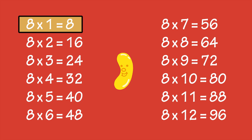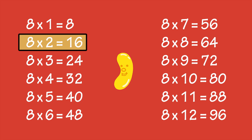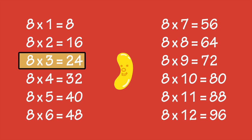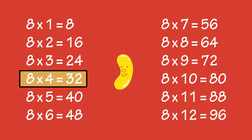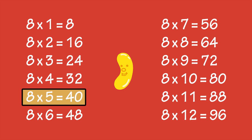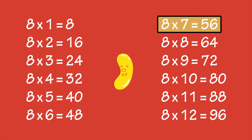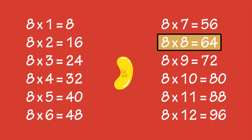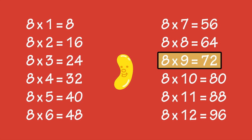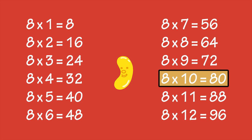8 times 1 is 8, 8 times 2 is 16, 8 times 3 is 24, 8 times 4 is 32, 8 times 5 is 40, 8 times 6 is 48, 8 times 7 is 56, 8 times 8 is 64, 8 times 9 is 72, 8 times 10 is 80.